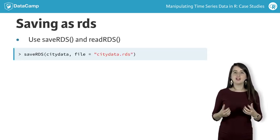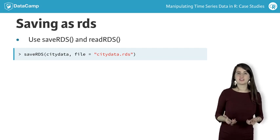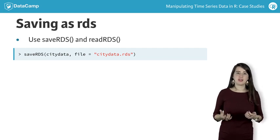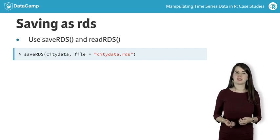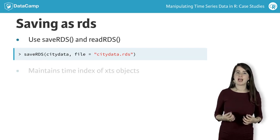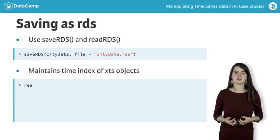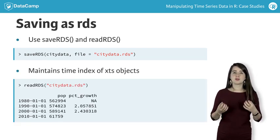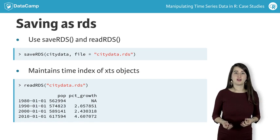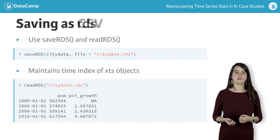When you load time series data back into R from an RDS file using readRDS, the data will keep all of its characteristics, including the time index of the XTS object. For this reason, this is the preferred method for saving XTS objects when working in R.